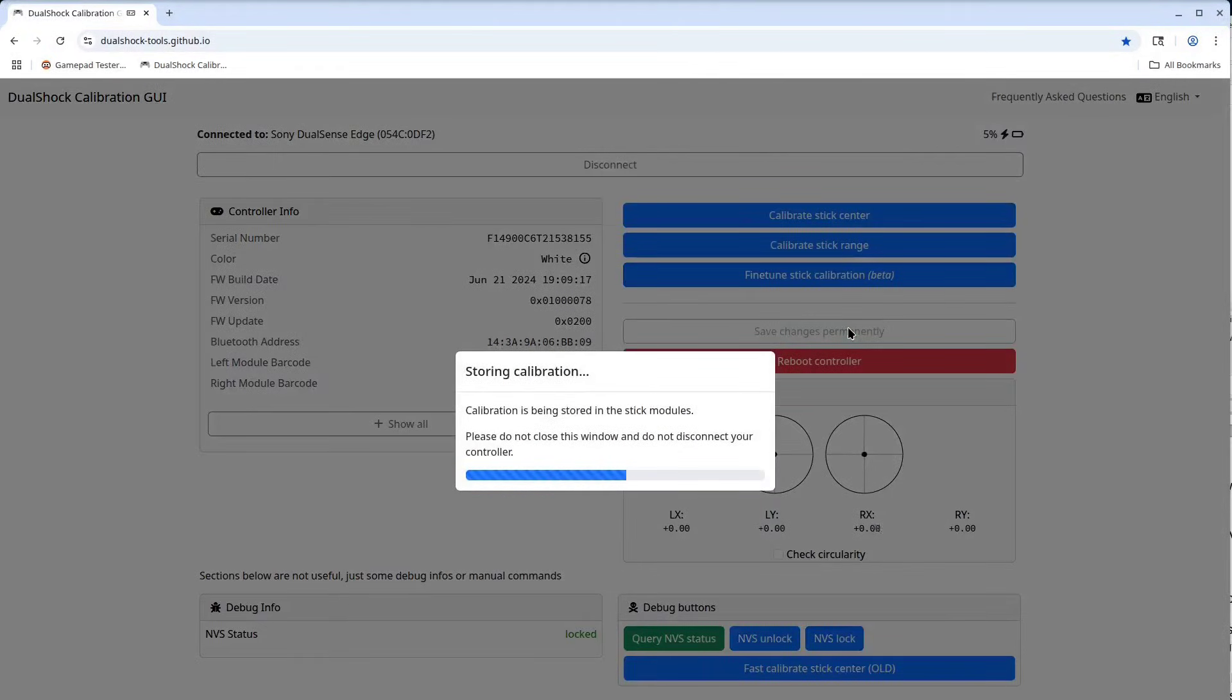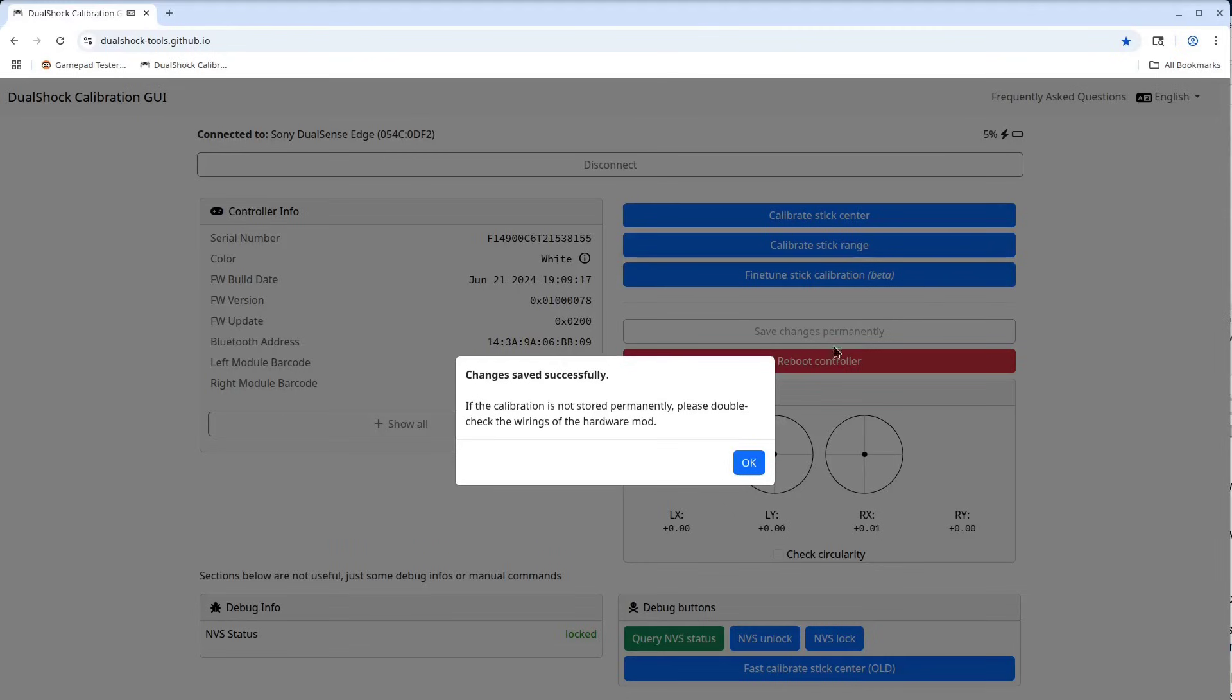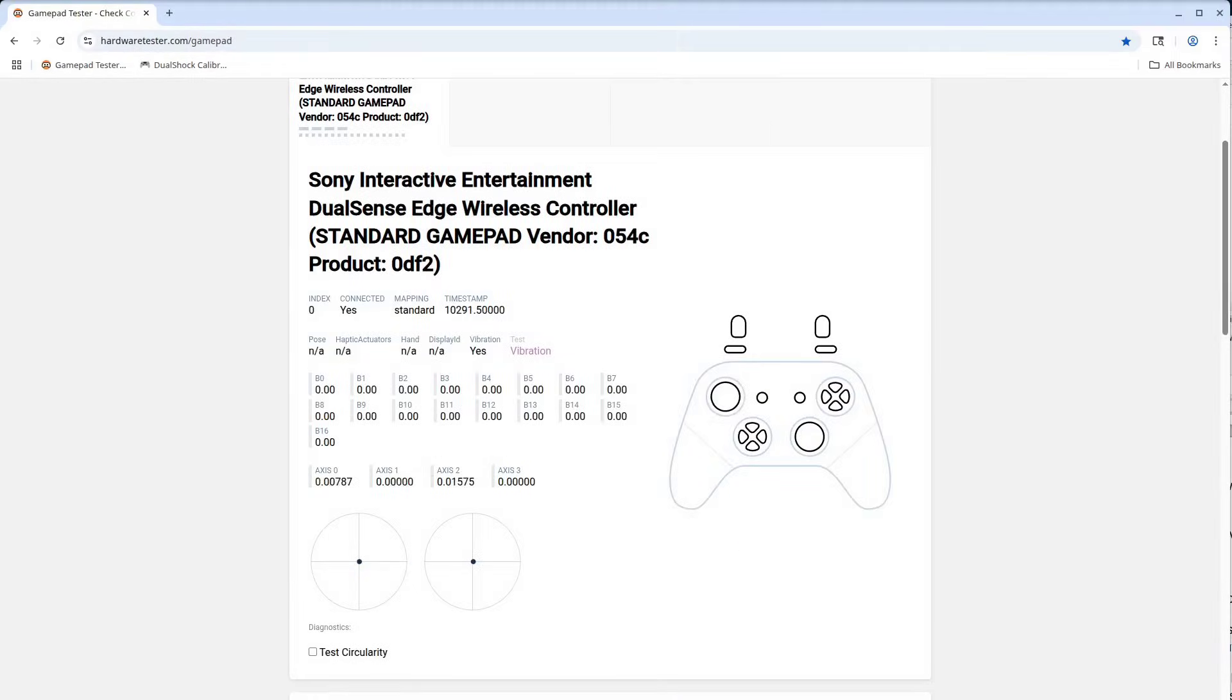I will save the calibration and then go to the GamePad Tester website to see how things look. Centering on the Favor Union is probably a bit better than the Ghoulikit as the Favor Union has a bit more tension.